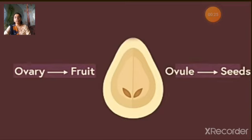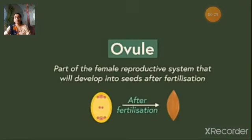An ovule is the part of the female reproductive system that will develop into seeds after fertilization. So, the ovule is a structure containing the embryo inside it, that is the baby plant.